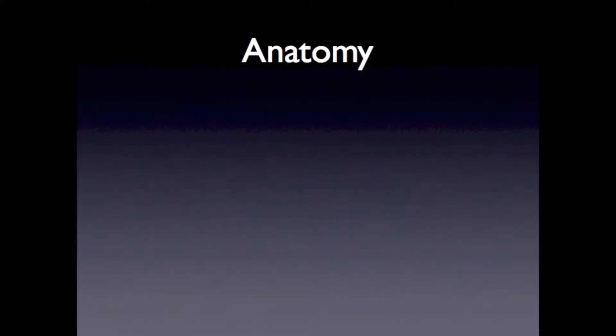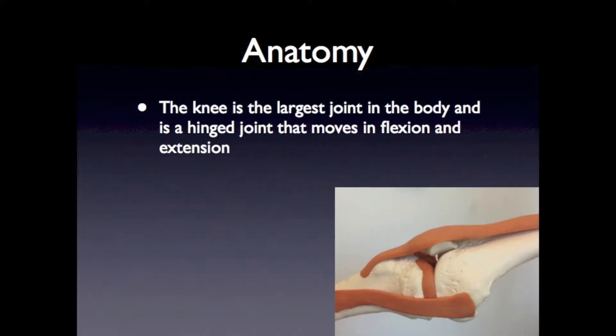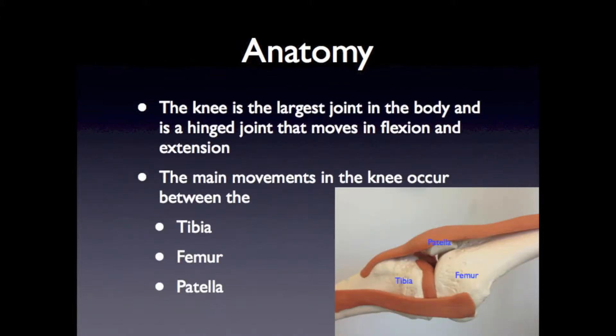The knee is the largest joint in the body and is a hinge joint that moves in flexion and extension. The main movements in the knee occur between the femur, the tibia, and patella. The fibula is not part of the knee articulation.